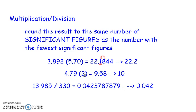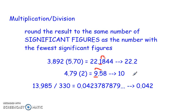4.79 times 2 — my calculator tells me 9.58. If I look at significant figures, 4.79 has 3, but 2 has only one significant figure. So my final answer should only have one significant figure. I'm going to round to the only place that has a significant figure. That 5, however, is going to round the 9 up to a 10. Notice I do not put a decimal point at the end of the 10 because that would give it two significant figures, and my final answer should only have one.